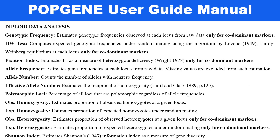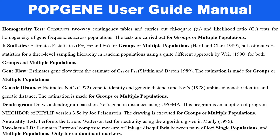Similarly, diploid data analysis will find gene and genotype frequency, Hardy-Weinberg equilibrium test, fixation index, allele frequency, allele number, effective allele number, polymorphic loci, observed heterozygosity, expected heterozygosity, Shannon index, homogeneity test, F statistics, gene flow, multiple population genetic distances, dendrogram, neutrality test, two-locus LD, and multiple populations analysis.